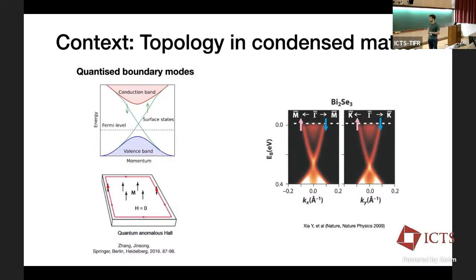One of the major breakthroughs of the last 20 years was that this physics of quantized boundary modes is not restricted to 2D systems — you can find these things in higher dimensions as well. As an example, here's a picture of quantized Dirac cones found on the surface of bismuth selenide.